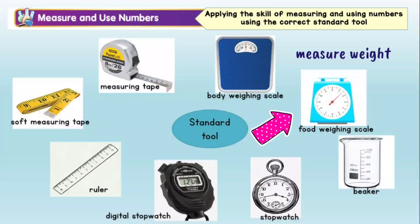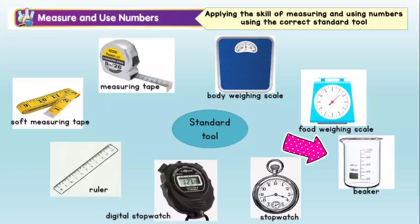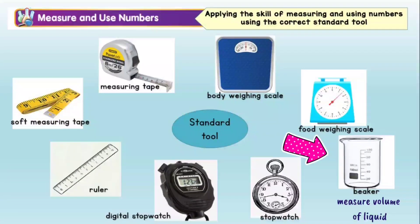A food weighing scale — alat penimbang makanan — is used to weigh food. Selalunya digunakan di pasar untuk menimbang sayur-sayuran. A beaker is usually used to measure the volume of liquid. Bikar digunakan untuk menyukat isi padu cecair.